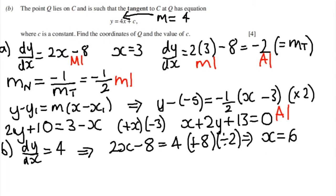The y coordinate we can then just find using the equation of the curve, so y equals 6 squared minus 8 lots of 6 plus 10. So I get 36 plus 10 is 46, 46 take away 48, y equals minus 2. So Q is the point 6, minus 2.